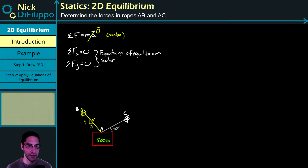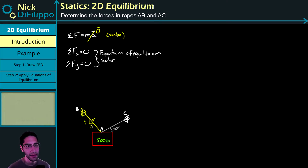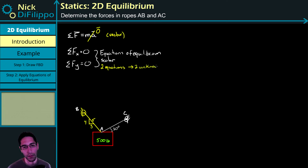We can use the 2D rectangular components in X and Y accordingly. Right now we have two equations, so that means at most we can solve for two unknowns. Two equations, two unknowns.